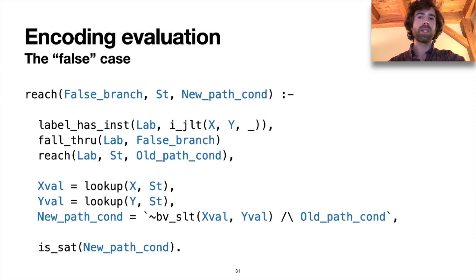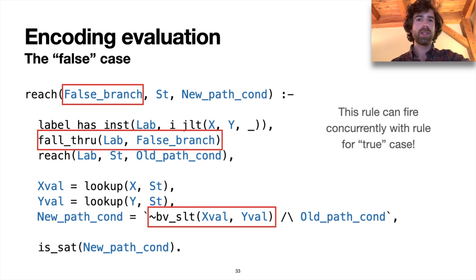We also have a rule defining the false case where we just fall through. And it's this rule here. It's pretty similar to what we had before with just a couple of tweaks. And the thing to note here is that this rule can actually fire concurrently with the previous rule. That is the condition for each rule. They can be satisfied simultaneously. And this is important for a reason that I'll get to in just a minute.